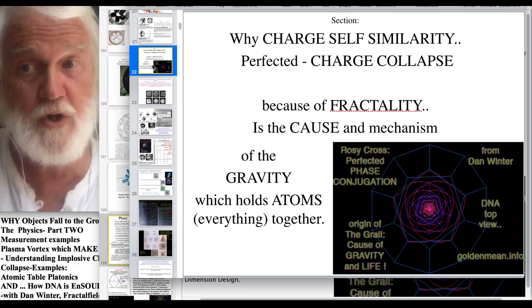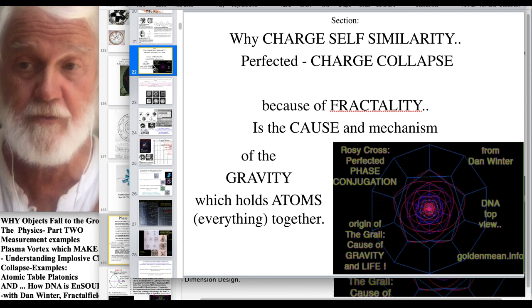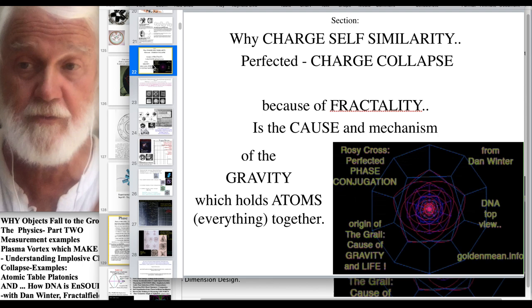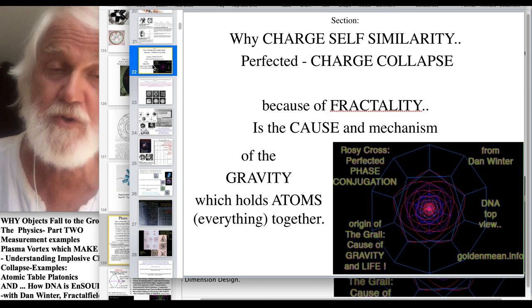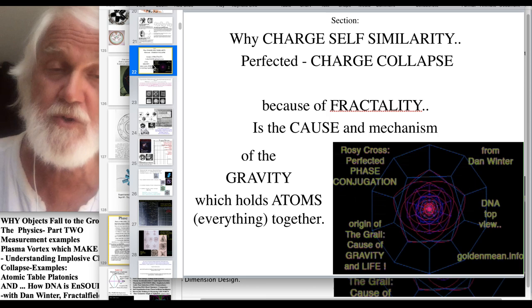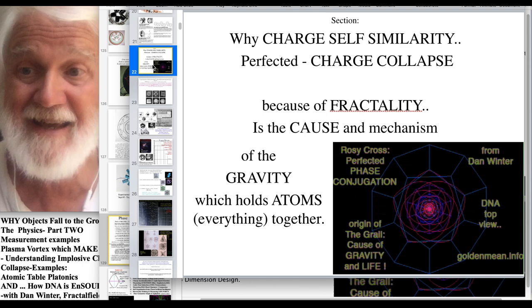We just looked at the fractal nature of hydrogen and powerfully speculated or hypothesized that golden ratio phase conjugate fractality is the reason hydrogen makes gravity, namely implosive non-destructive charge collapse through the Planck threshold, through the speed of light, enabling longitudinal propagation, creating gravity waves and the gravity wave grid, which is obviously fractal or dodeca related, golden ratio related. Now we want to extend that example to the platonic nature of the atomic table. So, we're saying charged self-similarity, perfected charge collapse because of fractality, is the cause and mechanism of the gravity which holds atoms together. And we're extending the conversation from hydrogen to the whole atomic table here.